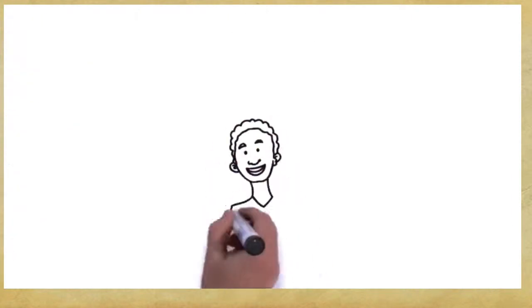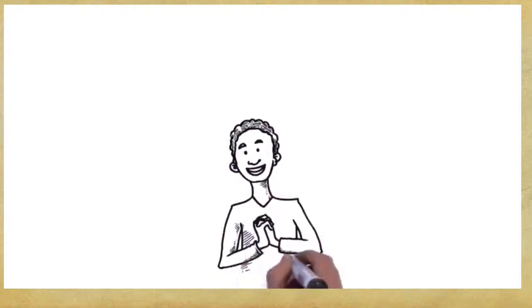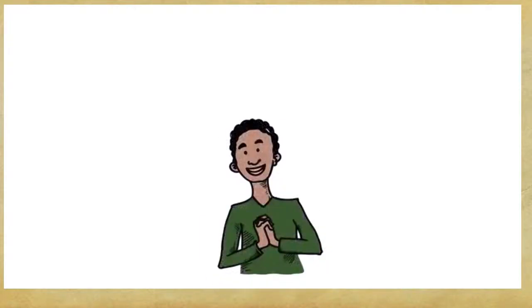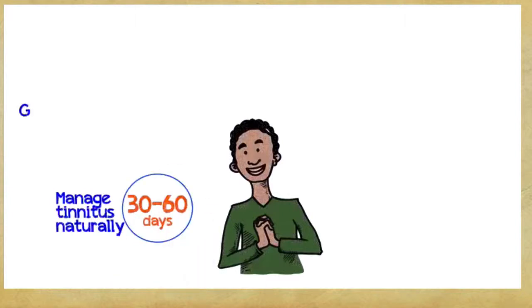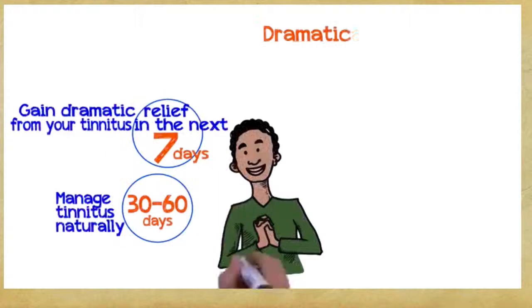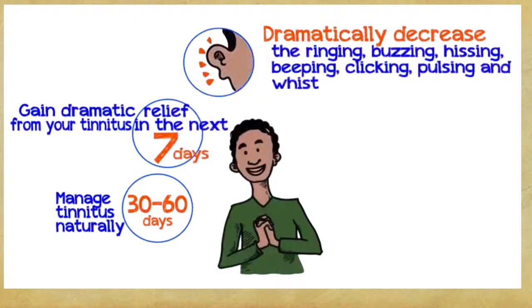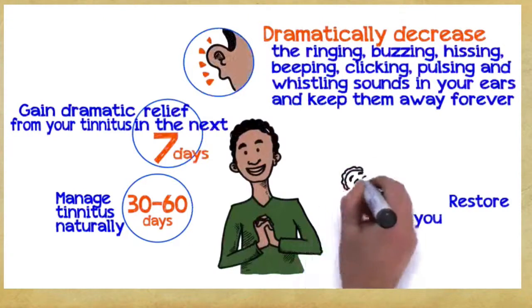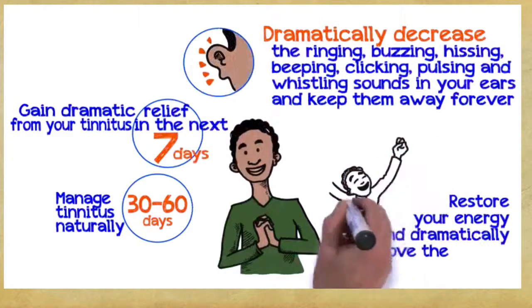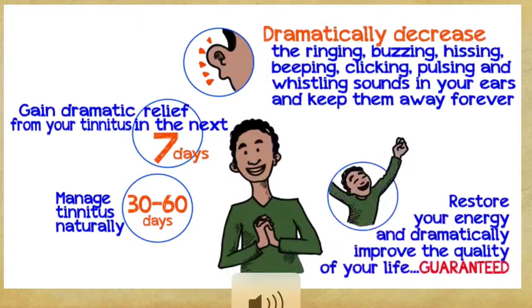So, what can you gain if you embrace these three easy principles? You can manage tinnitus naturally within 30 to 60 days, gain dramatic relief within the next seven days, dramatically decrease the ringing, buzzing, hissing, beeping, clicking, pulsing, and whistling sounds in your ears, and restore your energy and dramatically improve the quality of your life, guaranteed.